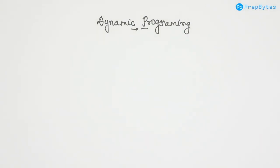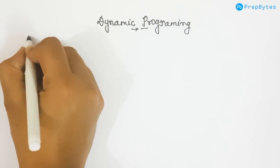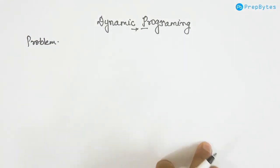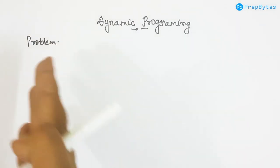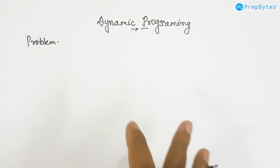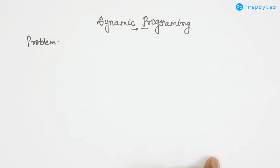In this session we are going to discuss dynamic programming. We have seen several algorithms like divide and conquer, in which we try to solve a problem by dividing it into sub-problems. What happens many times is that the same sub-problem may get solved again and again — the sub-problems are overlapping.